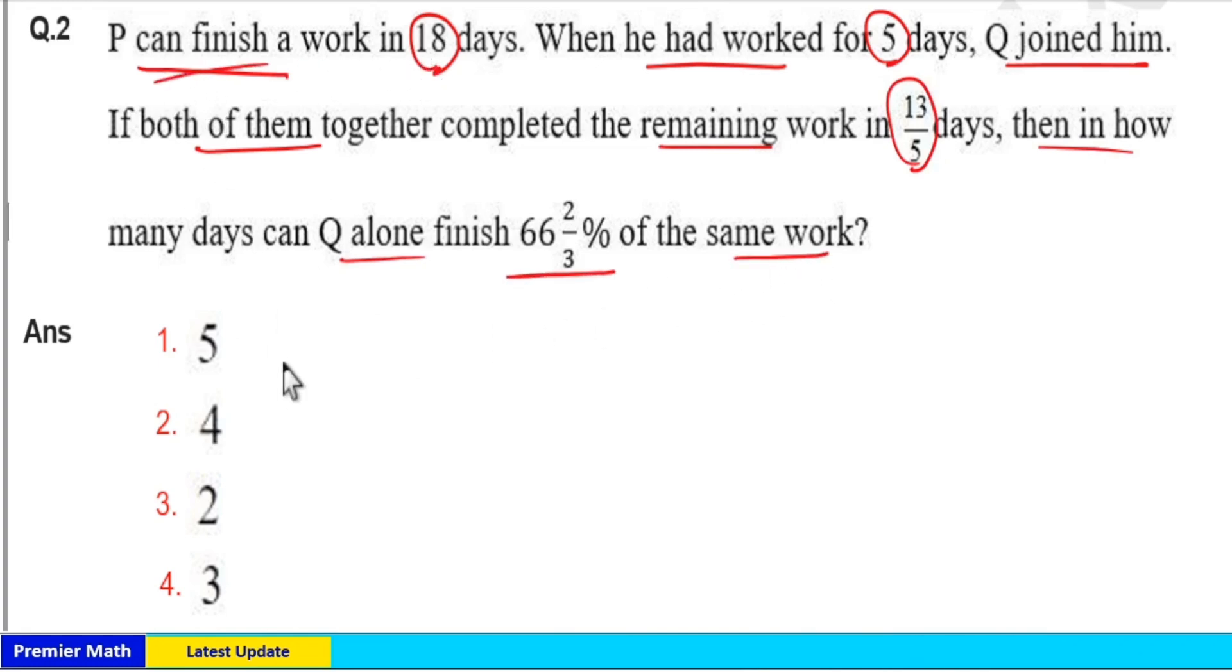P can finish a work in 18 days means consider total work as 18 units. This 18 units completed in 18 days means efficiency of P here is 1 unit. P worked for 5 days, then remaining work is equal to 18 minus 5, 13 units.